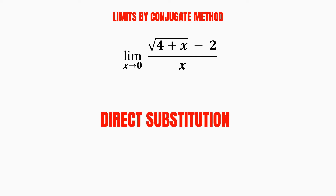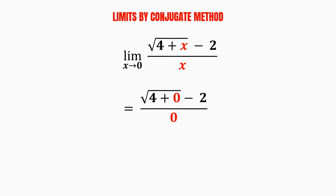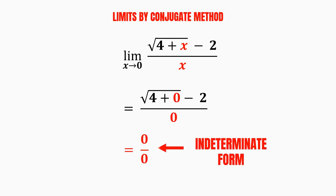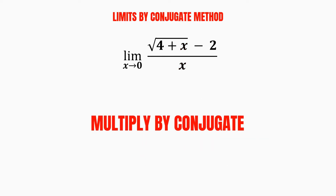Notice that if we apply direct substitution by plugging the value 0 into variable x, we will end up getting 0 divided by 0, which is one of the indeterminate forms. Therefore, we will first need to multiply the fraction by the conjugate.